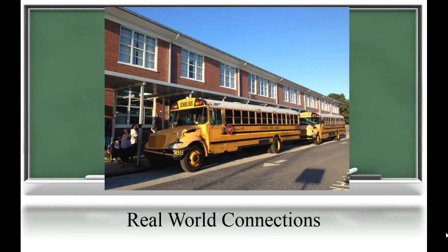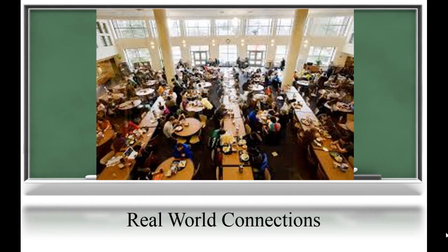There are real-world connections to division everywhere. One connection is with school buses — you can divide the number of students in the school by the number of students that could fit on a school bus. This is a great opportunity for remainders because we definitely don't want to have any kids left over at the bus stop. Other connections involve sitting students at tables in the cafeteria: you can divide to find the number of tables needed or the number of students at each table. This is also a great opportunity to work with remainders because we don't want any students left out or not sitting at a table.